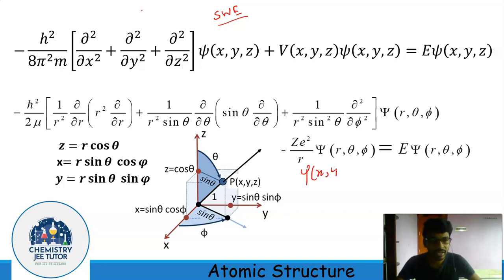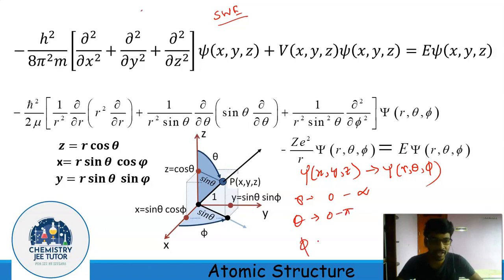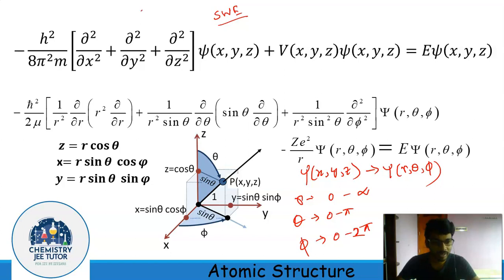The Cartesian coordinate ψ(x, y, z) transforms into ψ(r, θ, φ), where r can take values from 0 to infinity, θ can take values 0 to π, and φ can take values 0 to 2π. Imposing these conditions into the differential equation leads to 3 quantum numbers. We can see that the solution of the Schrödinger wave equation depends on these 3 numbers, which are called the quantum numbers.